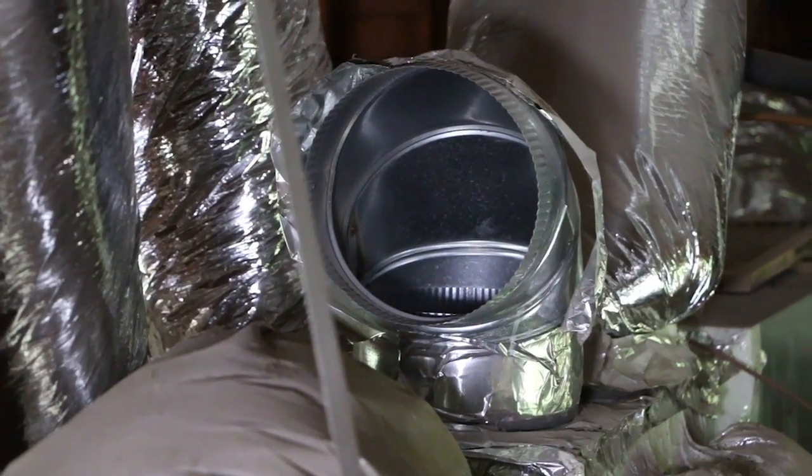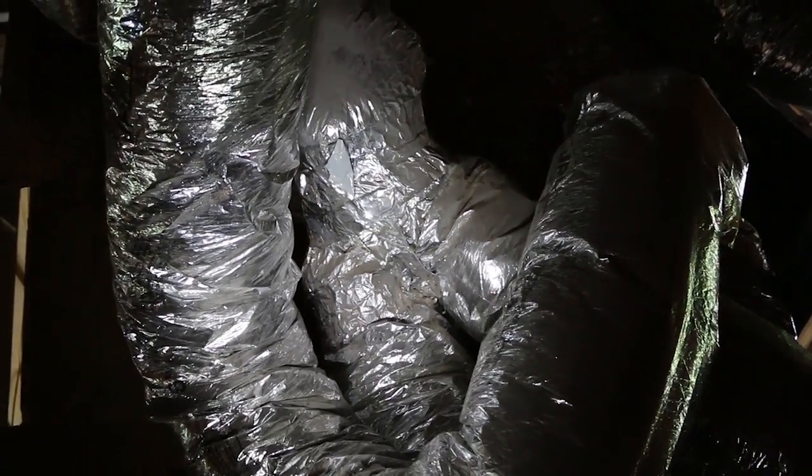Some of the leakage pathways were pretty easily identified, such as a supply duct that was just laying disconnected from the actual air handler. Other leaks were a little more hidden, and it took us a second to find.